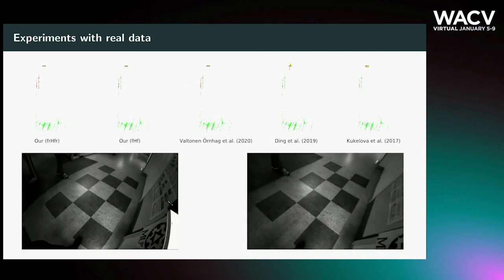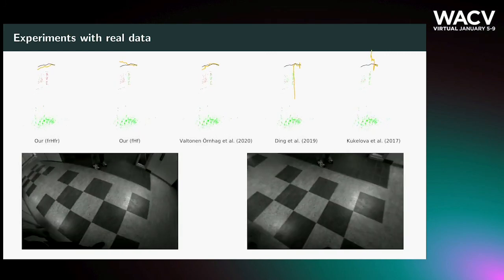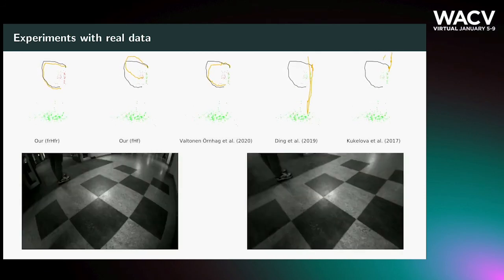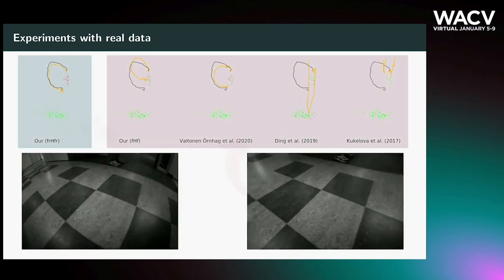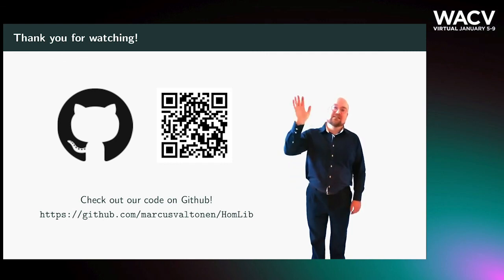Furthermore, we show that the proposed method for simultaneously correcting lens distortion, focal length and estimating motion parameters is better or on par with the current state-of-the-art, even if the other methods are given pre-rectified input images, whereas our method accepts the raw images. On top of this, it is faster than most of the competing methods. The source code is available on GitHub. We hope you've enjoyed our presentation. Have a nice WACV 2021!